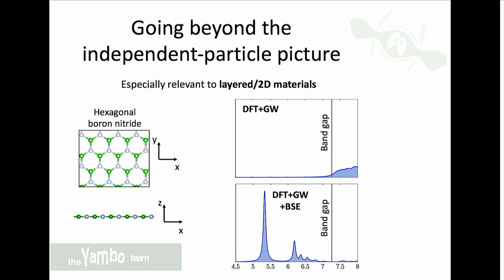In low-dimensional systems it is crucial to include excitons and the electron-hole interaction. This large exciton binding energy occurs because in lower-dimensional systems the electron-hole interaction is weakly screened — the field lines between electron and hole are mostly in vacuum where there are no electrons, so the Coulomb interaction is screened much more weakly than in a bulk system.